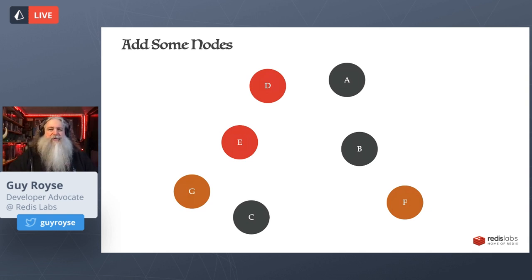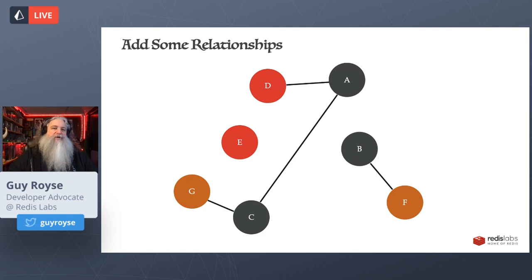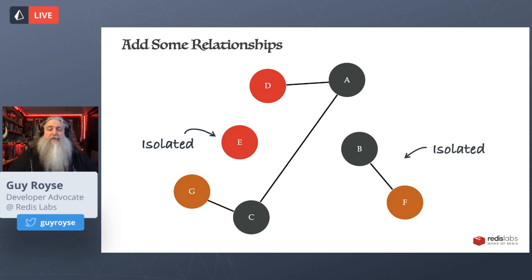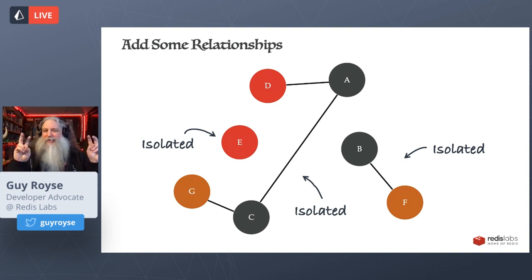Let's add some relationships: A is related to D, C is connected to A, G is connected to C, and so on. You'll notice that not everything is connected to everything — portions of this graph are islands. Node E isn't connected to anyone, so it's an isolated subgraph. Those two nodes over there are also an isolated subgraph, and even the middle section is isolated because it's not connected to everything else.